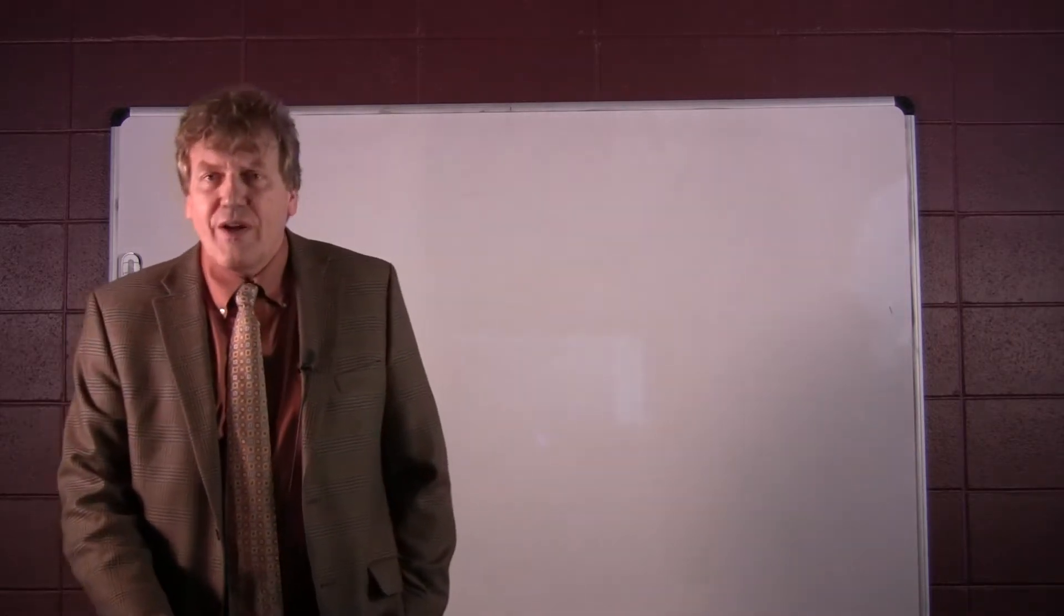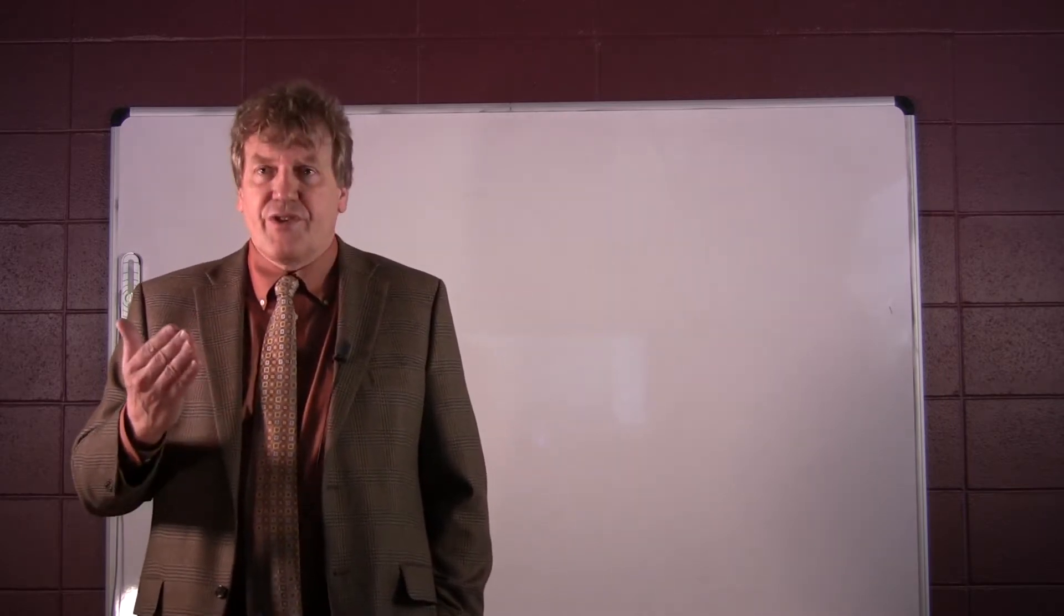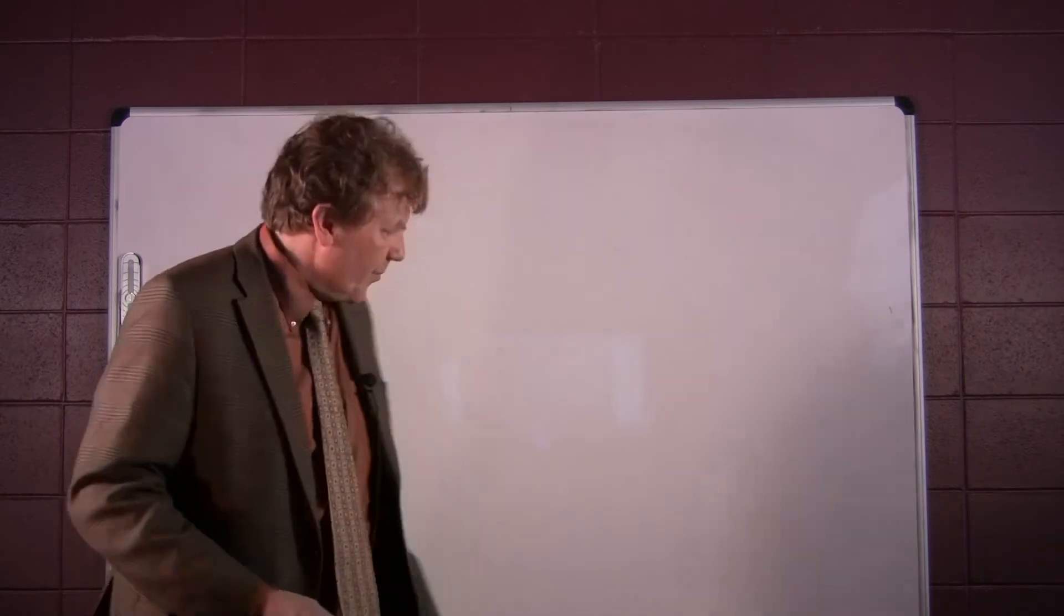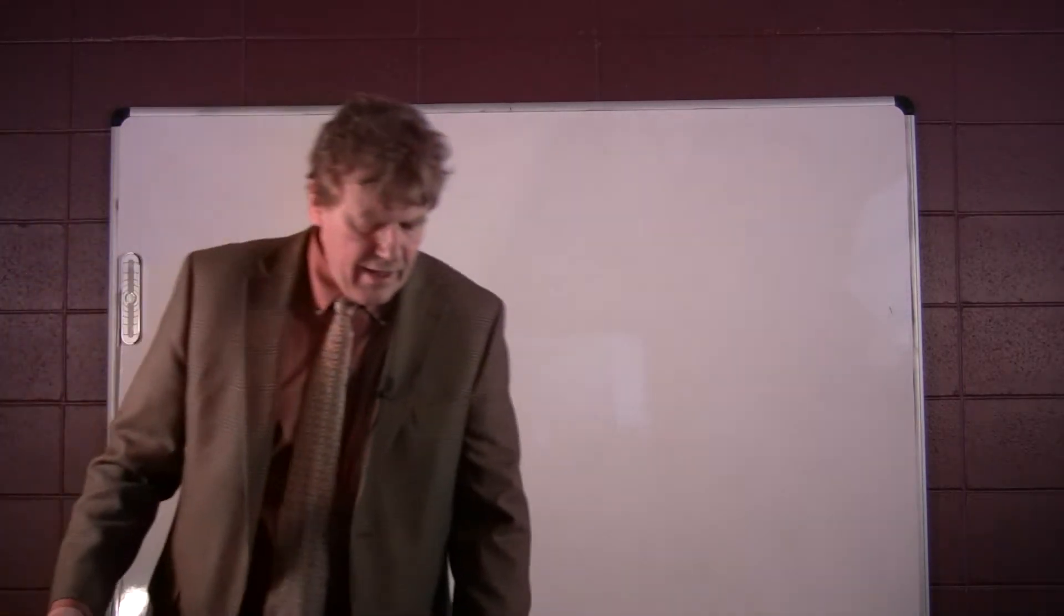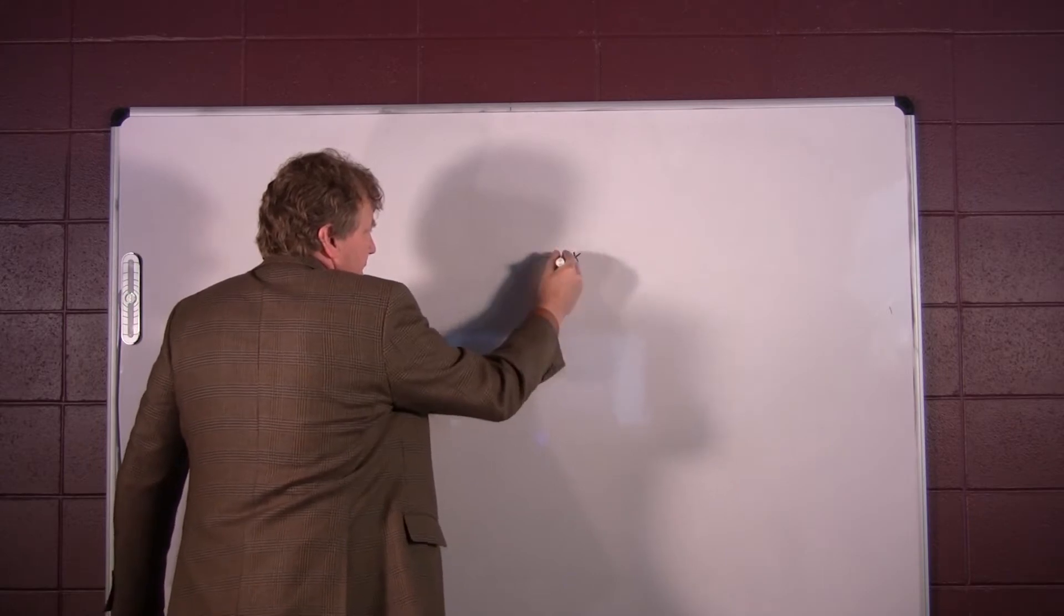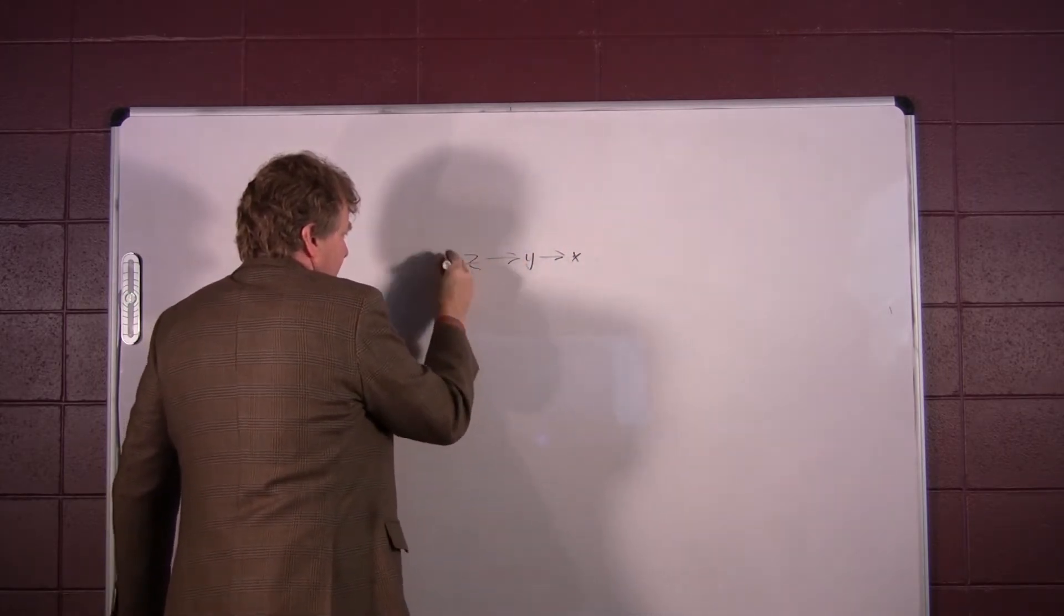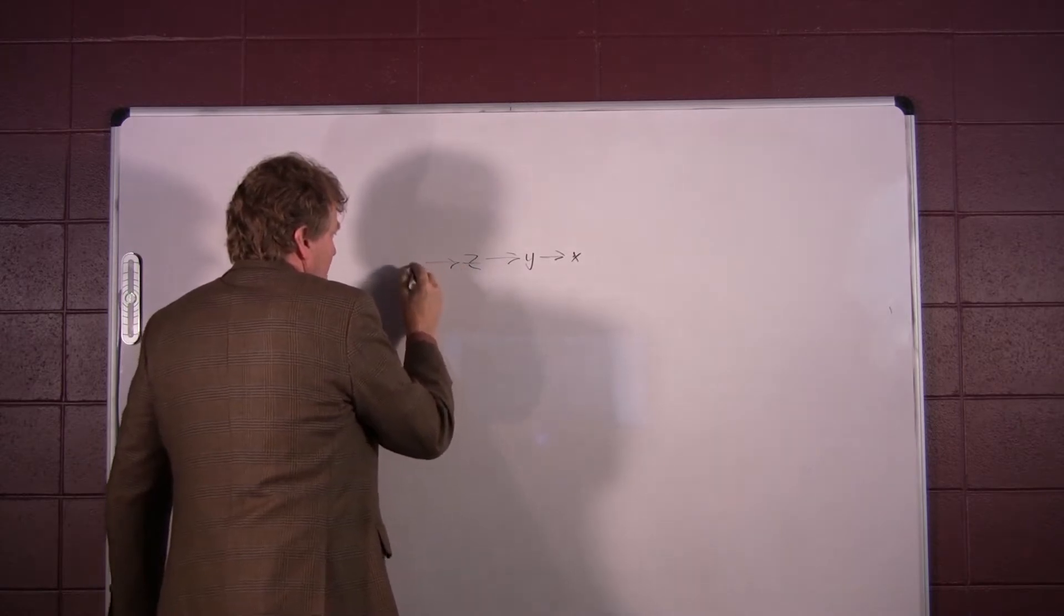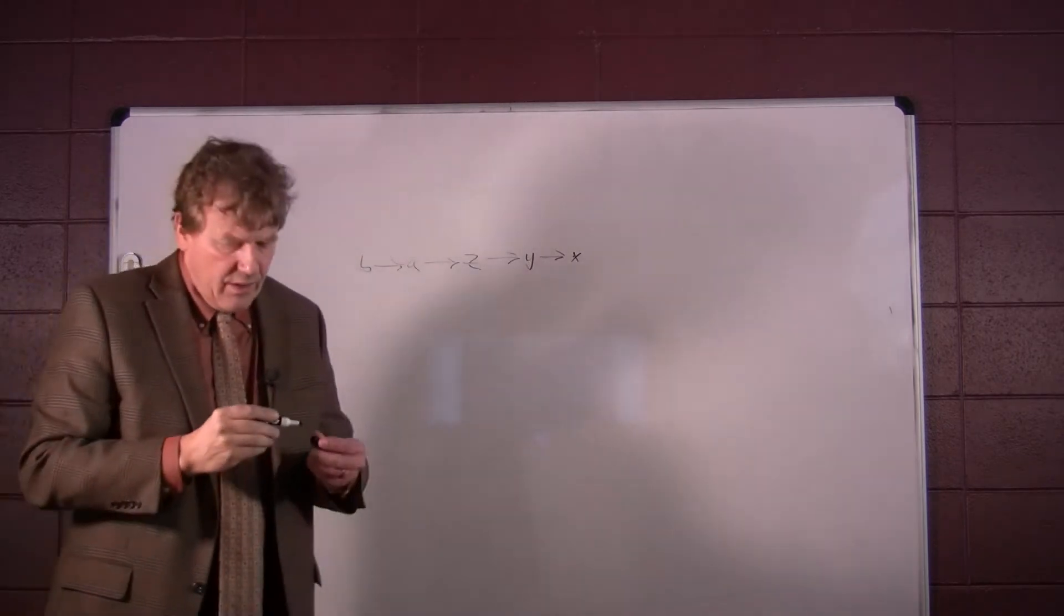So the big question in this argument is, can a series of produced producers proceed interminably? A series of produced producers, can it proceed interminably? So we have this x, something produces that, something produces that. Can this keep on going forever to the left?